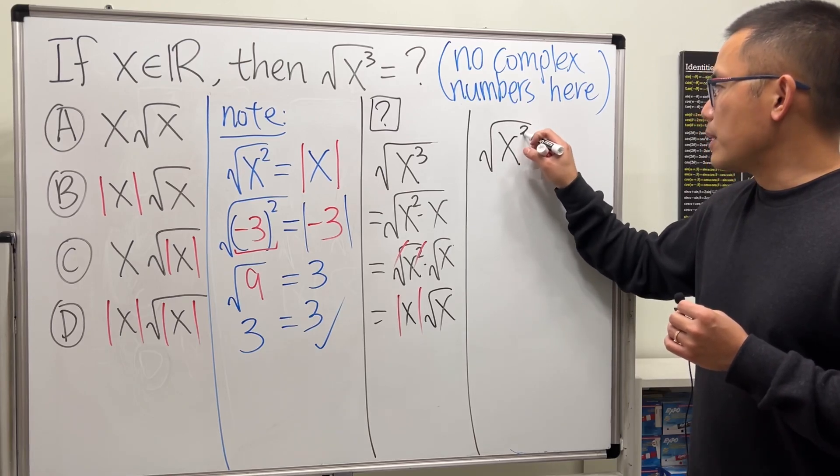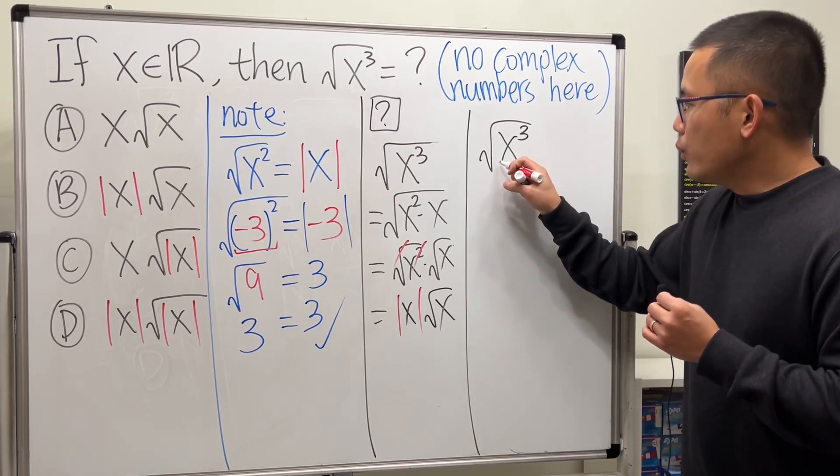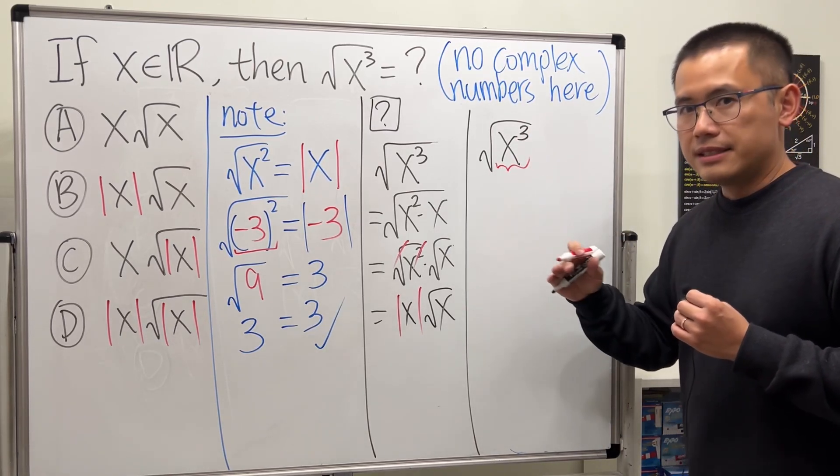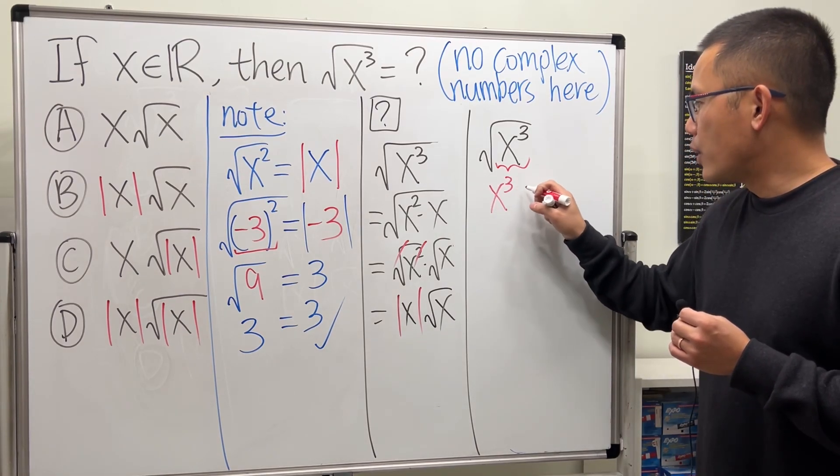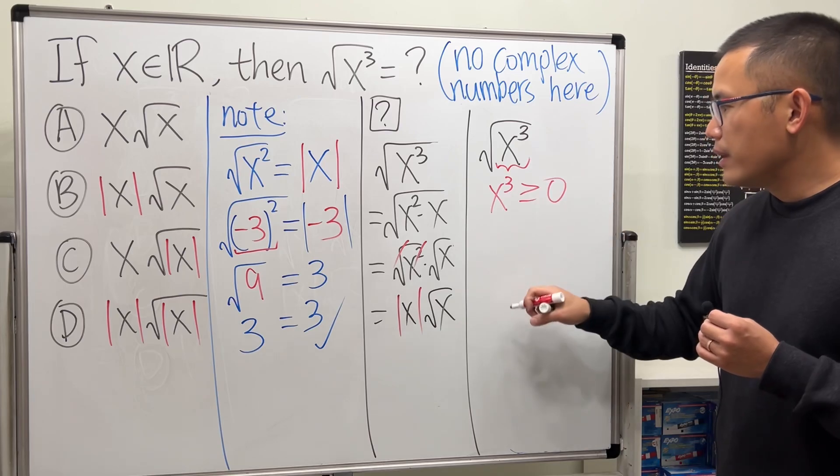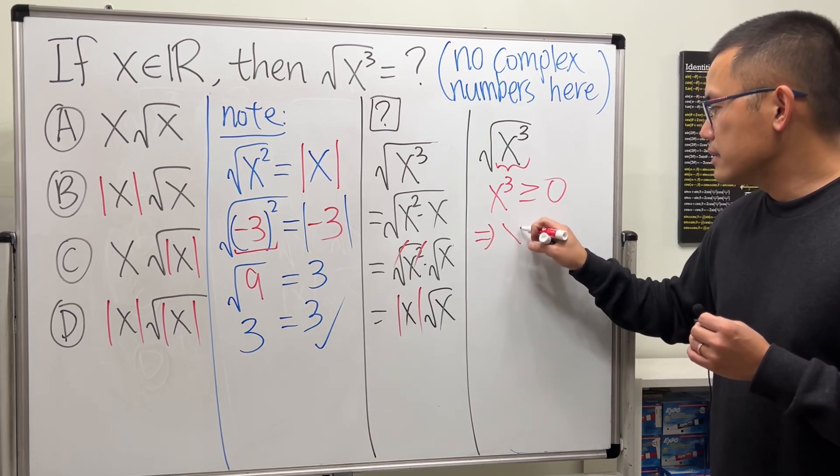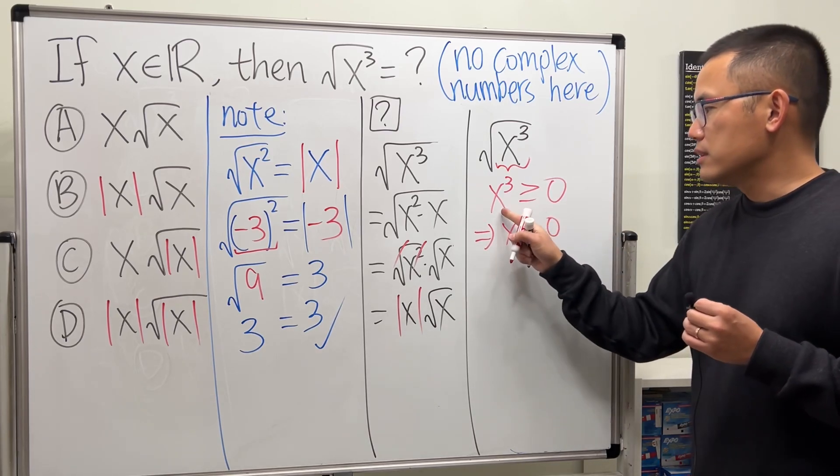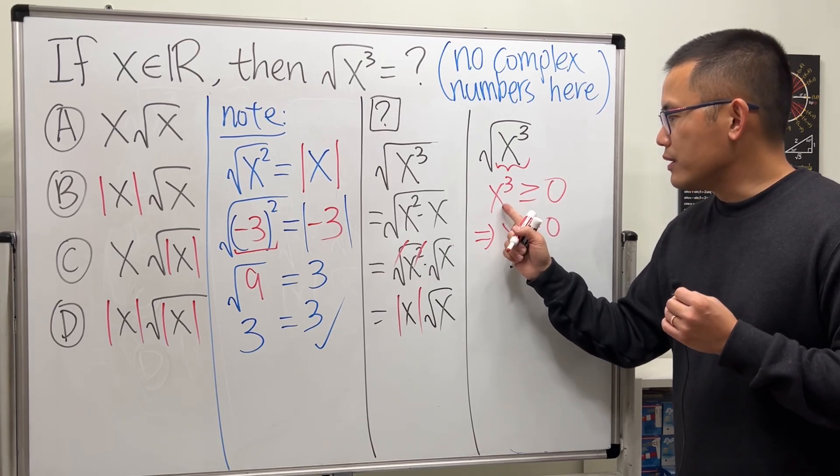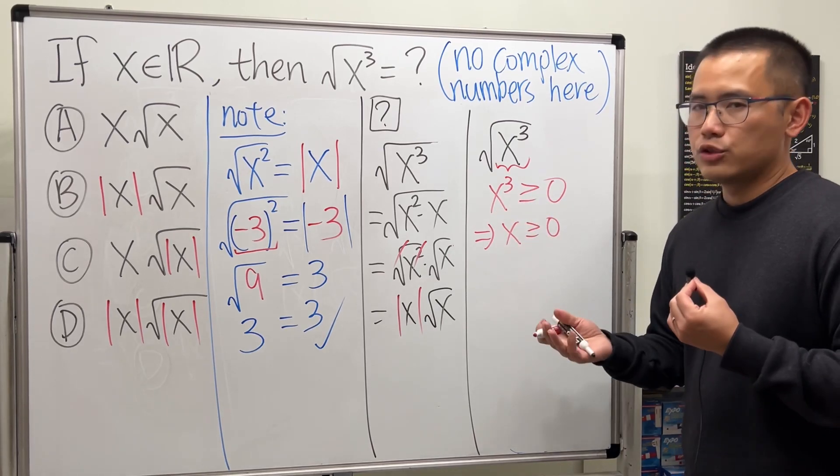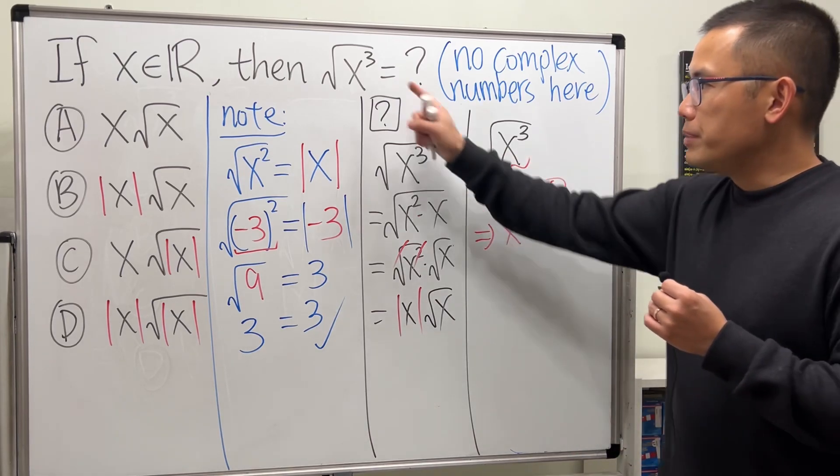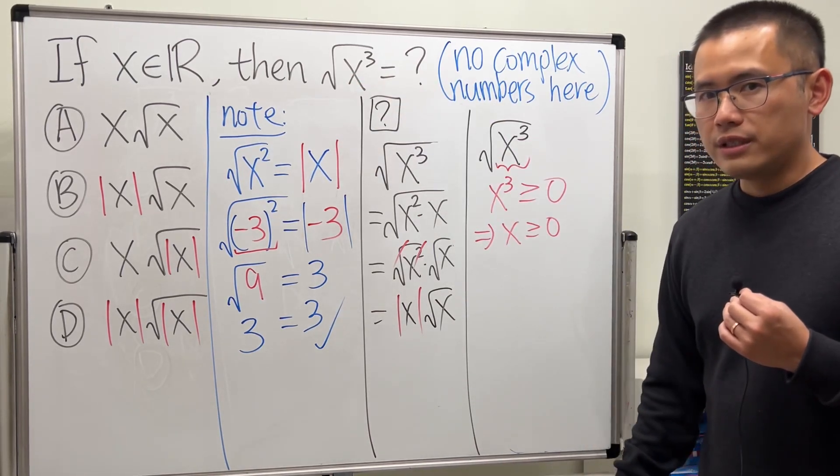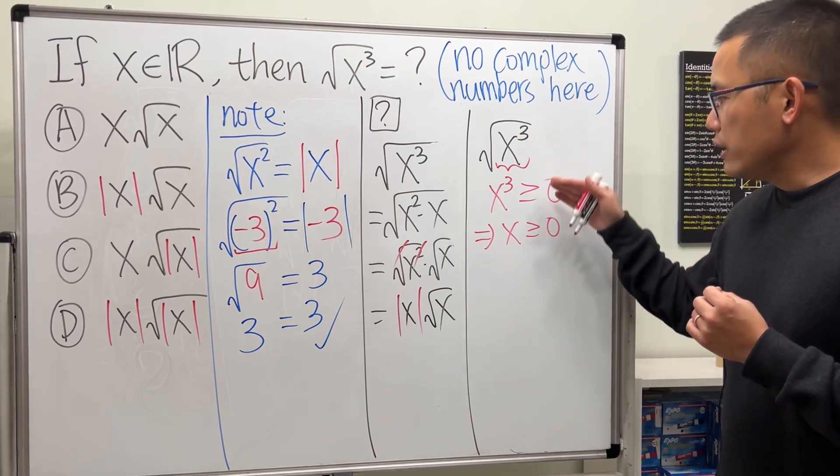When we have square root of x to the third power, we have to make sure that the inside is non-negative. So we will have to say x to the third power is greater than or equal to zero. But this implies x is greater than or equal to zero, because we have an odd power. In order for this to be greater than or equal to zero, x has to be greater than or equal to zero. So we already have this condition because of how the square root is written in the first place. So in fact, all the things are non-negative.